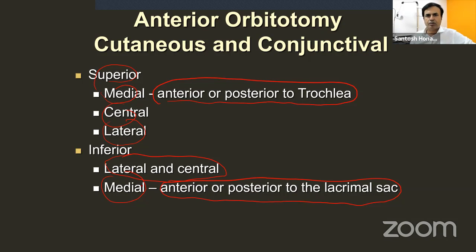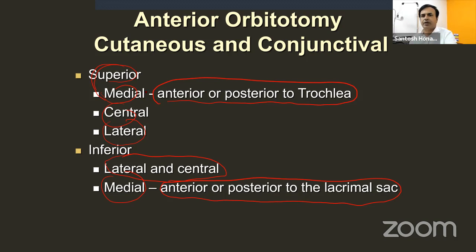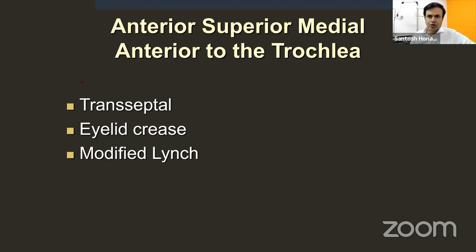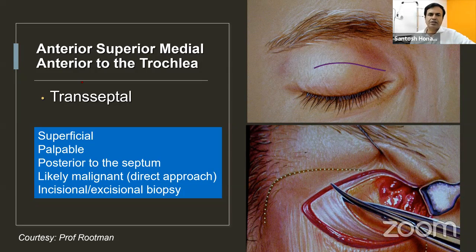For anterior superior medial — anterior to the trochlea — there are three cutaneous incisions: transeptal, eyelid crease, and modified Lynch. If a lesion is superficial, vaguely palpable, posterior to the orbital septum, and likely malignant, a direct approach is required for either incisional or excisional biopsy. For a medial supranasal lesion, the transeptal approach is used as it is a direct approach, without creating a skin-muscle flap.